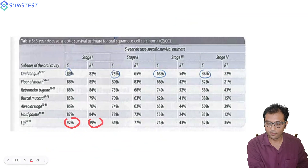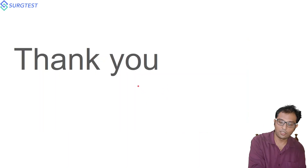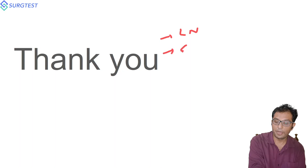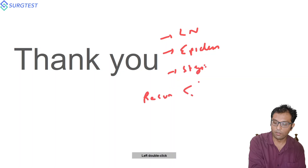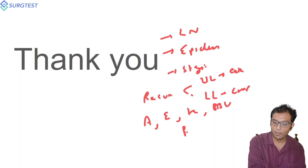In summary, the key topics from this class on carcinoma lip are: lymphatic drainage of the lip, epidemiology of lip cancers, staging, and the reconstruction algorithms — what to do for upper lip versus lower lip. Upper lip is more related with aesthetics; lower lip is more related with competence. Important flaps to remember: Abbe flap, Estlander flap, Karapandzic flap, Bernard-Burow-Webster flap, and perialar crescentic excision — when each is used. If one question comes in the exam, it will be on reconstruction and these flaps.